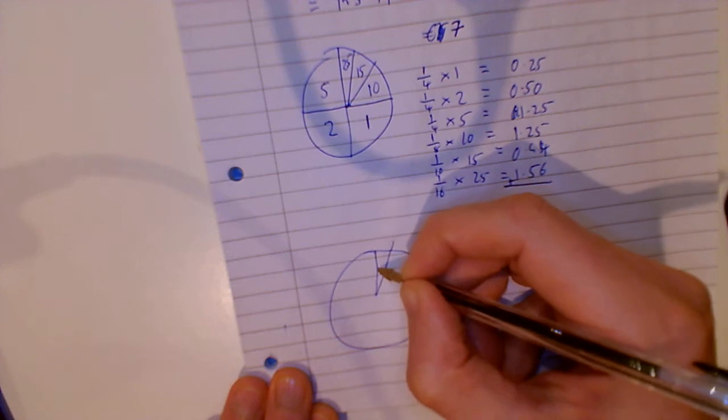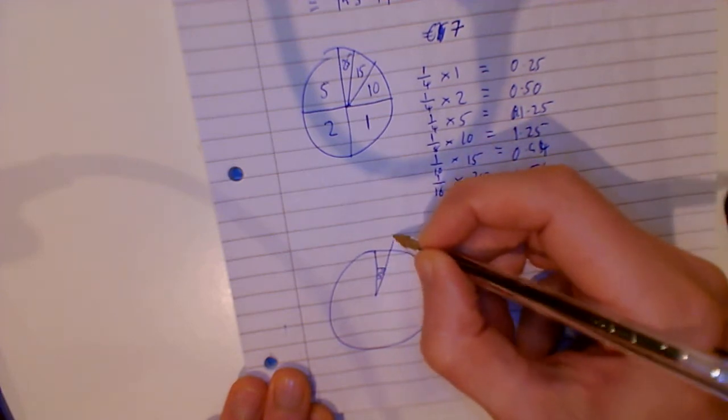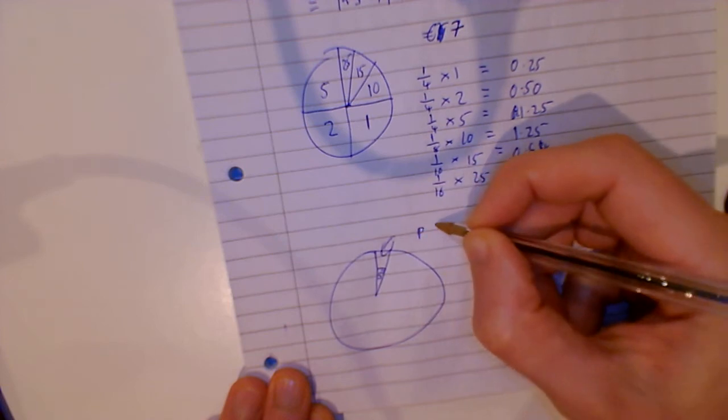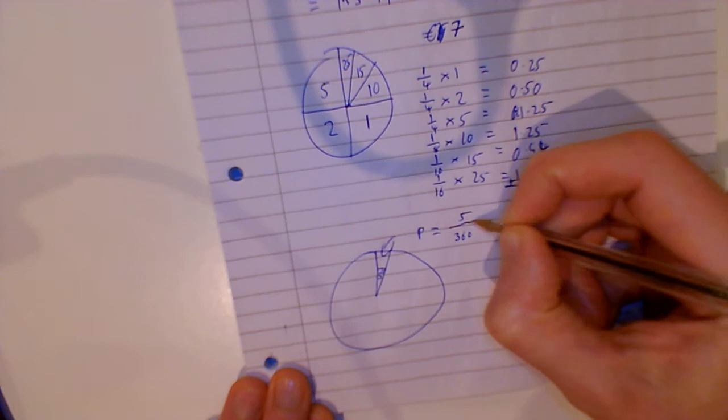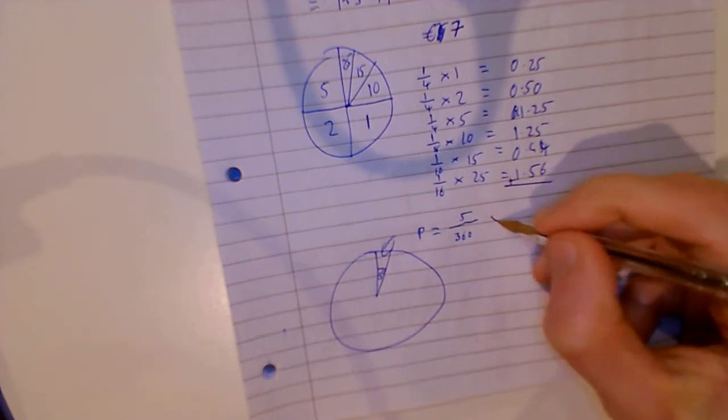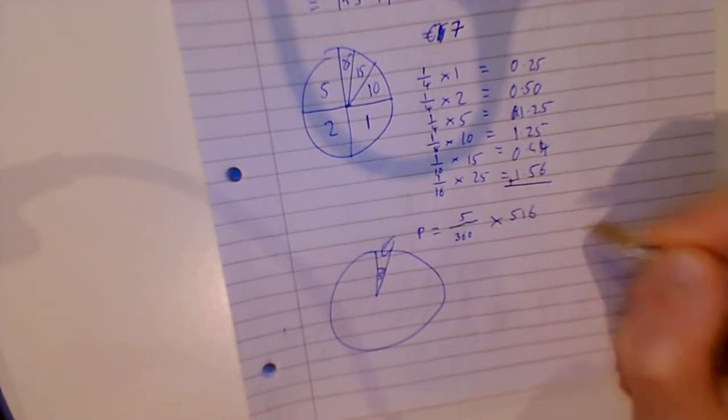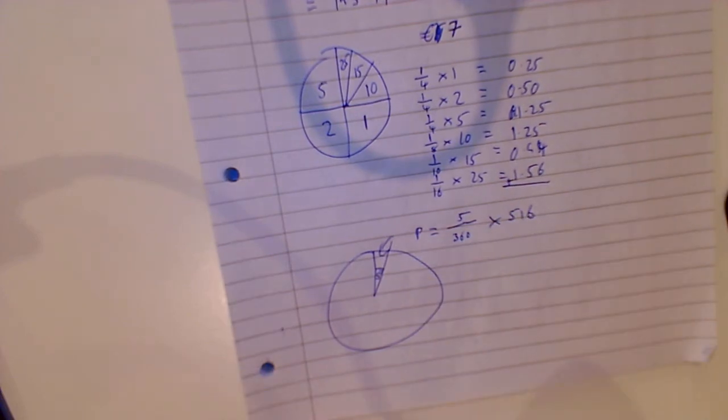So below here they might have something in here and they might say that that's five degrees. Well, the probability of that sector there is five over 360, because it's five degrees of the 360 degree turn. And if that payout was 516 euro, five over 360 multiplied by 516, that would tell us the expected outcome of that one specific area.